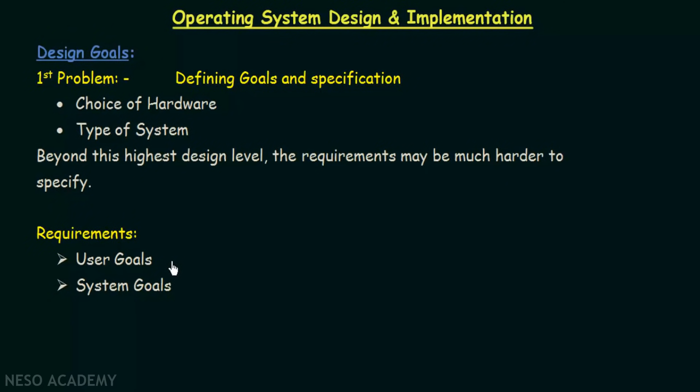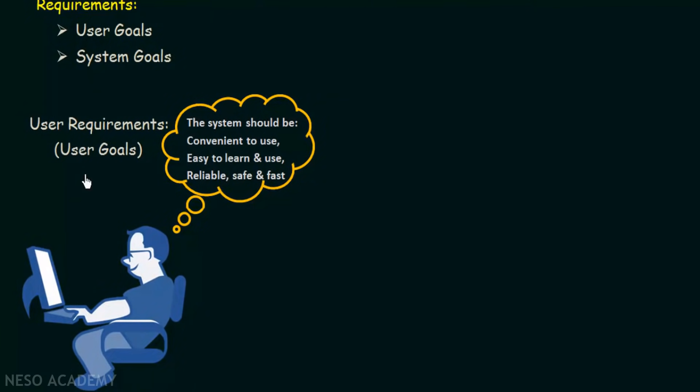User goals are the requirements from the user's perspective. From the user side, the user wants the system to be convenient to use, easy to learn and use, reliable, safe, and fast.